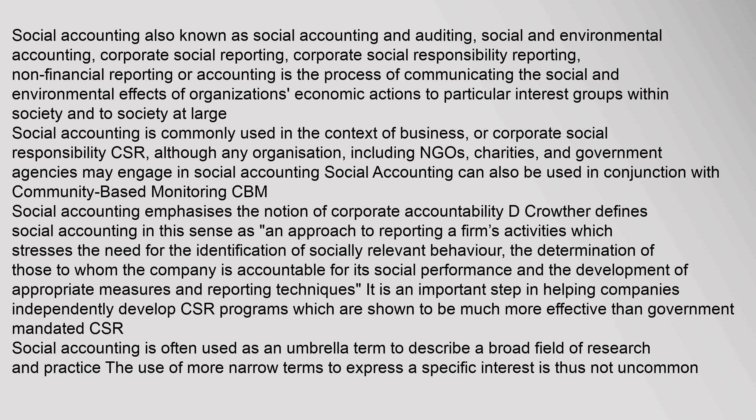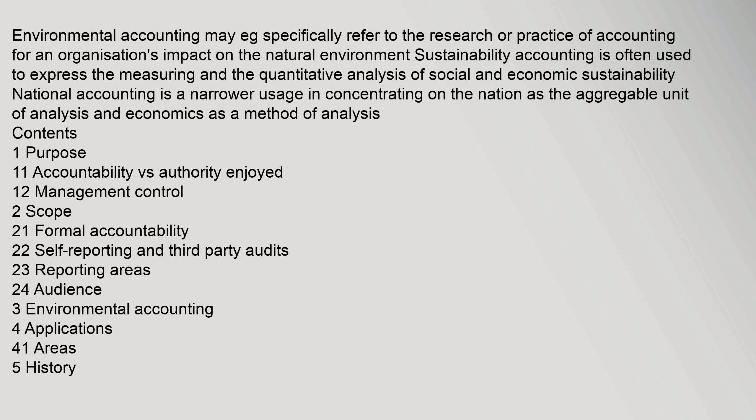Social accounting is often used as an umbrella term to describe a broad field of research and practice. The use of more narrow terms to express a specific interest is not uncommon. Environmental accounting may specifically refer to the research or practice of accounting for an organization's impact on the natural environment. Sustainability accounting is often used to express the measuring and quantitative analysis of social and economic sustainability. National accounting concentrates on the nation as the unit of analysis.